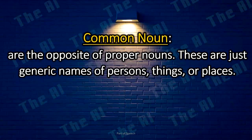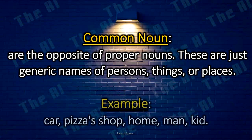Common nouns are the opposite of proper nouns. These are just generic names of persons, things, or places. Examples: Car, Pizza Shop, Home, Man, Kid.